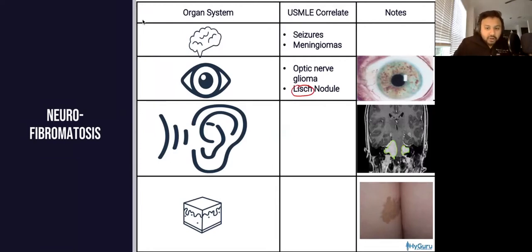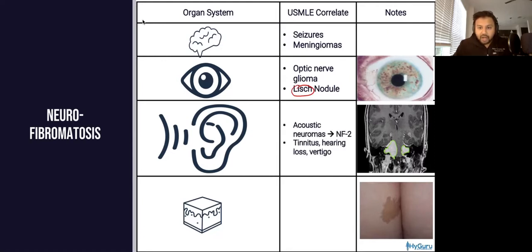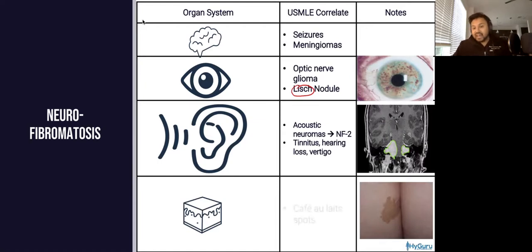From an ear standpoint, especially with NF2, you're going to be thinking about acoustic neuromas. Watch for tinnitus, hearing loss, and vertigo in your test questions. And then finally, these café au lait spots — that's what got us into this integration.